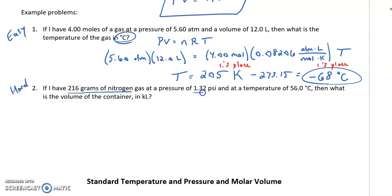And then it gives me a pressure, 1.32 psi. Pounds per square inch. I could convert that into atmospheres, but that's going to be an extra step. And then it gives me a temperature, 56.0 degrees Celsius. We just talked about how to convert Celsius into Kelvin, but notice there's all these little steps that we're adding in. What is the volume of the container in kiloliters? So we're changing what that final unit has to be. We know volume is going to be liters from our equation. We'll have to solve here.